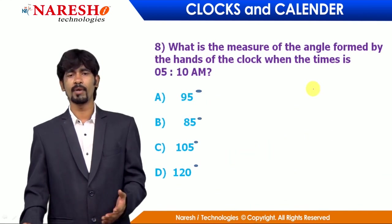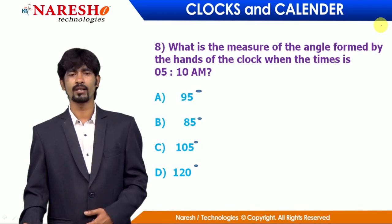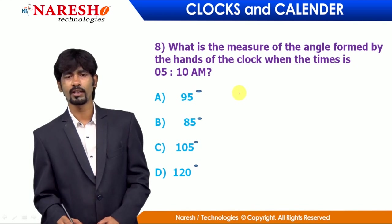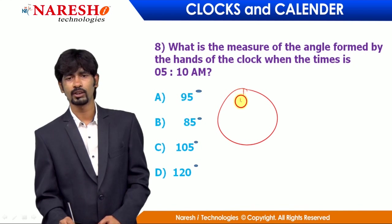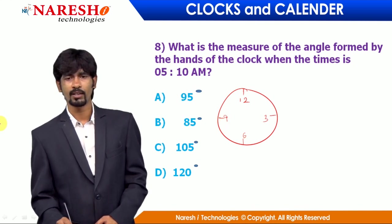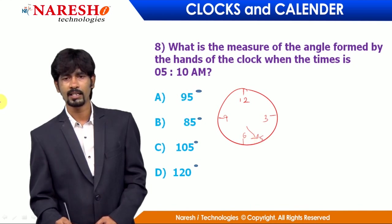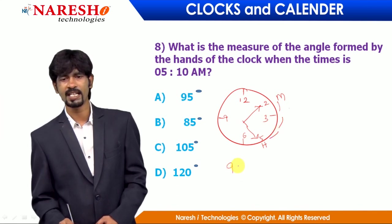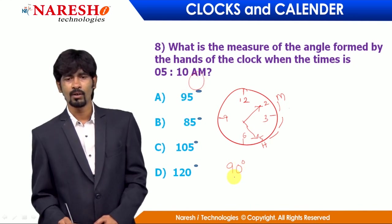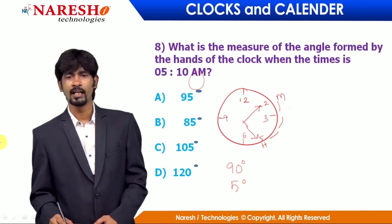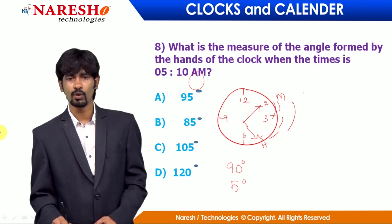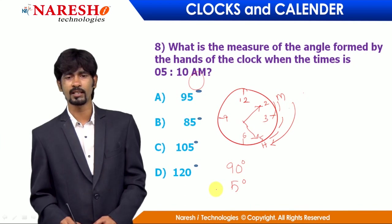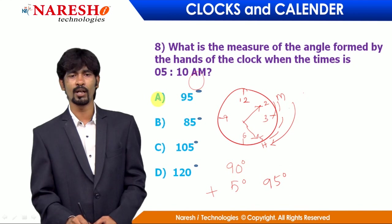Question 4: what is the angle between the two hands at 5 o'clock 10 minutes? We already solved this. Hours hand at 5, minutes hand at 2. From 2 to 5: 3 hours → 90 degrees. Tilt due to 10 minutes: 10 × 0.5 = 5 degrees. Going M to H, add: 90 + 5 = 95 degrees. Mark the answer as 95 degrees, option A.